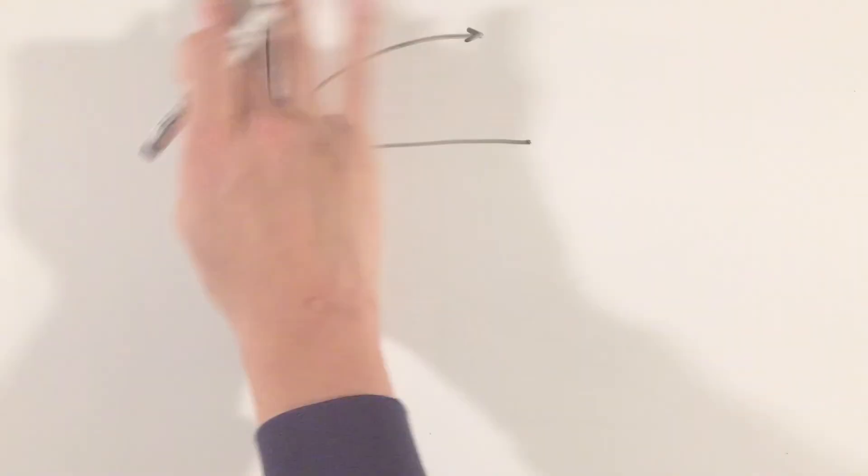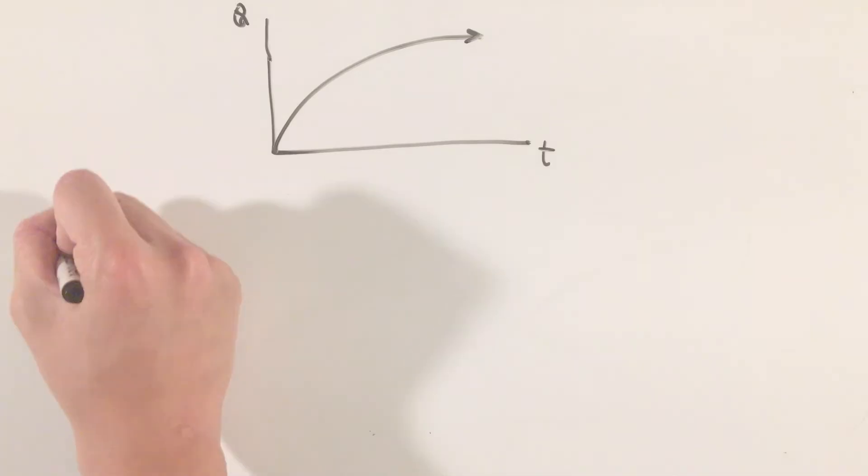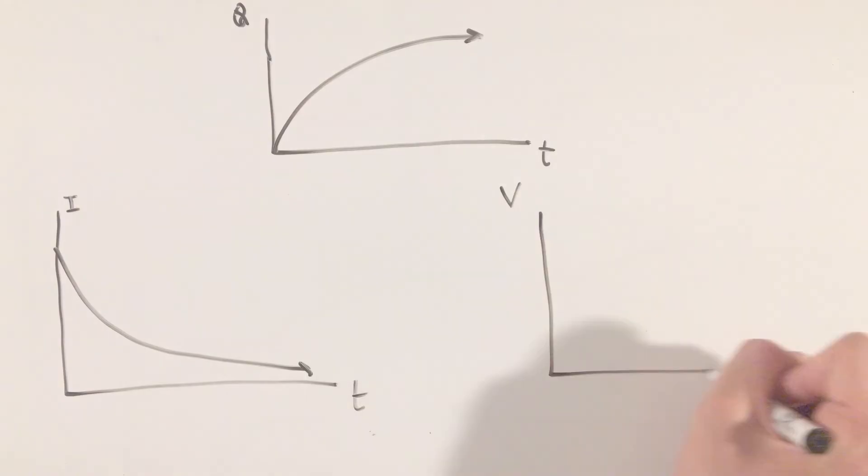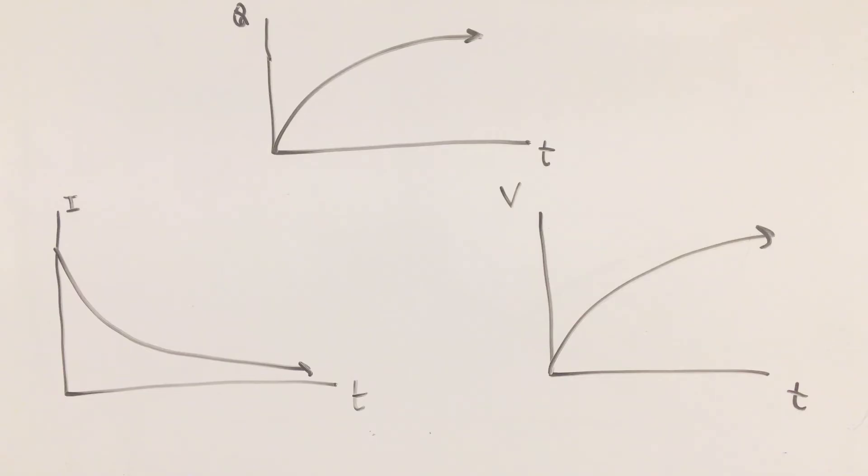Now, these graphs technically only apply to this one specific type of RC circuit. In other cases, such as when the capacitor starts charged and discharges across a resistor, or there are parallel or combination arrangements, use the exact same process of solving this differential equation from Kirchhoff's loop rule to find the related equations of the specific circuit you're dealing with.